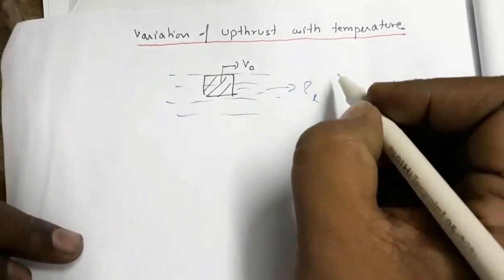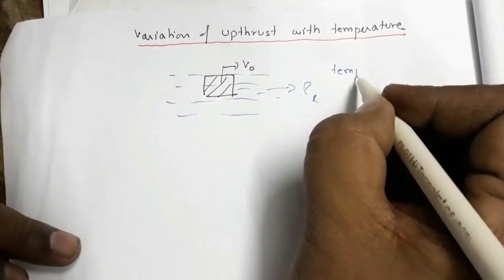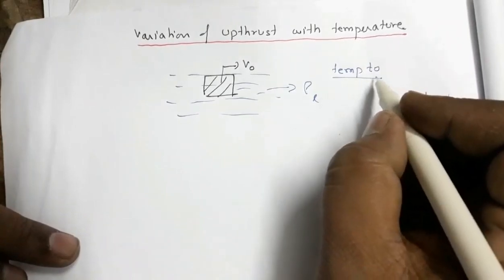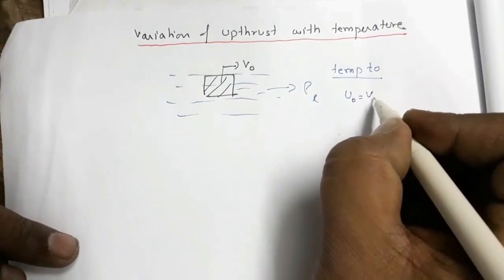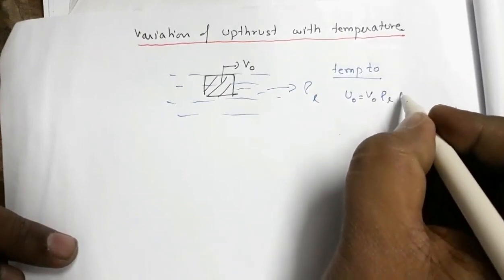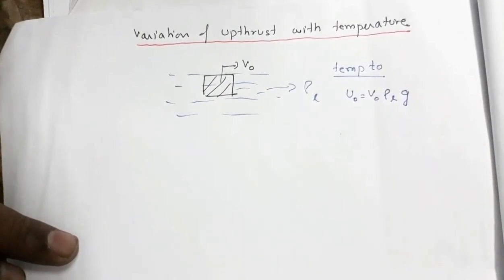Now suppose this is the state at temperature T0. So at temperature T0, the upthrust U0 is equal to V0 ρL into G.